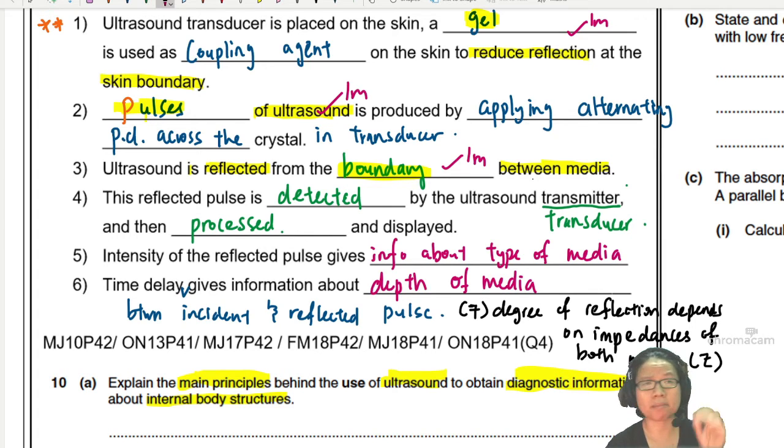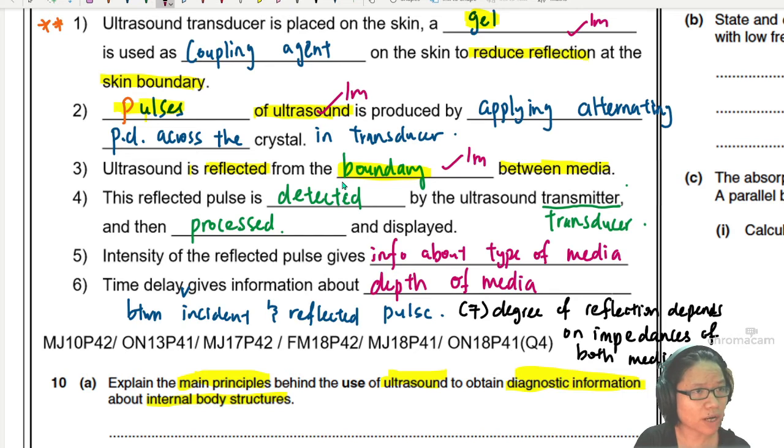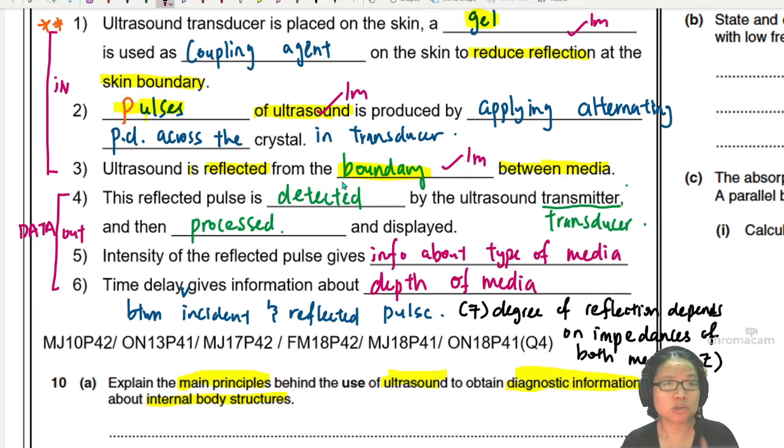The reflected ultrasound is now picked up and detected. So this is ultrasound going in. Point 1, 0.2, 0.3, ultrasound going in. Point 4, now it's time to detect the ultrasound. So I guess if I'm going to write anything, I'll just say these three points here is generating and sending the ultrasound in. Going in. And then this one is when the ultrasound come out. It detects your data. Data coming out. So first, we're going to detect the ultrasound using an ultrasound transducer, which is the same thing. And then the data is processed and displayed. So if you mention that the reflected pulse is detected by the ultrasound transducer, to show that you know the transducer is doing both generating and detecting ultrasound, that would be one mark.